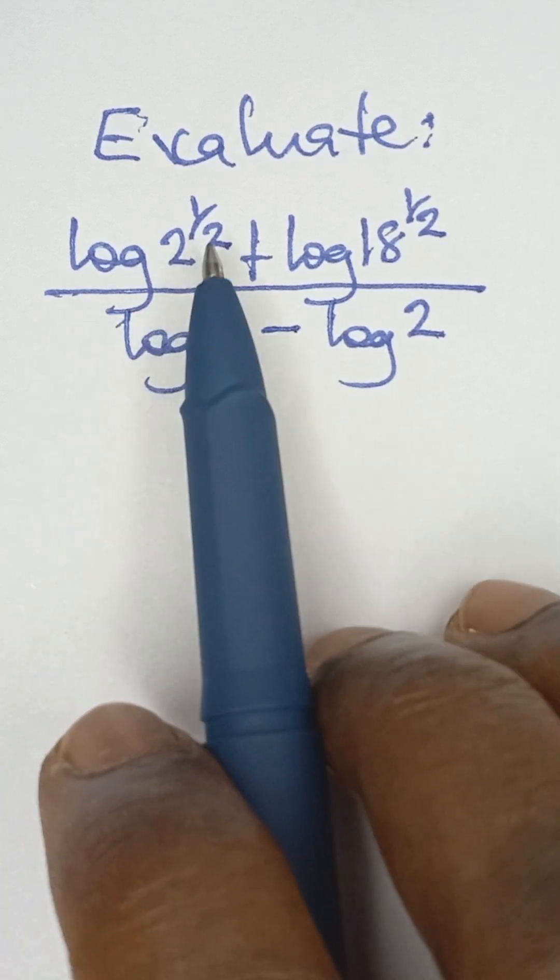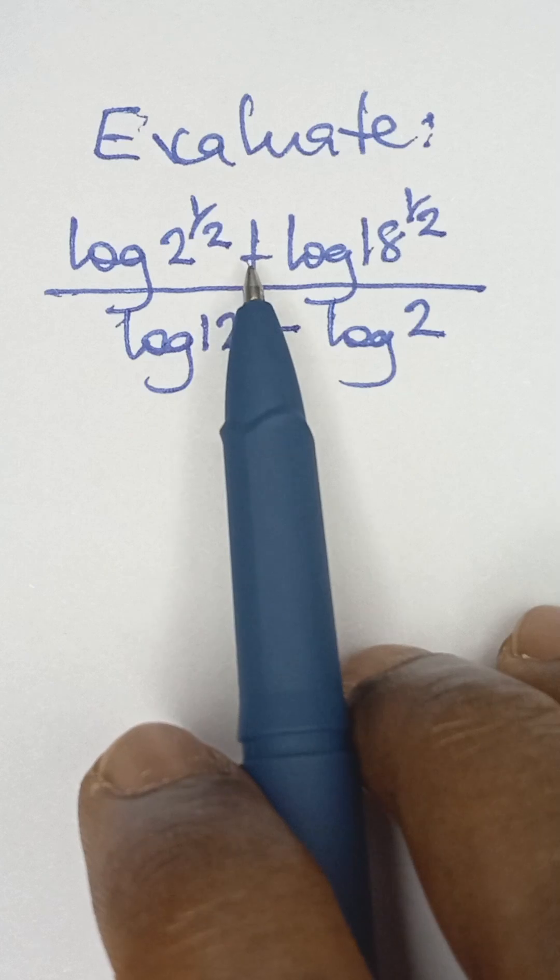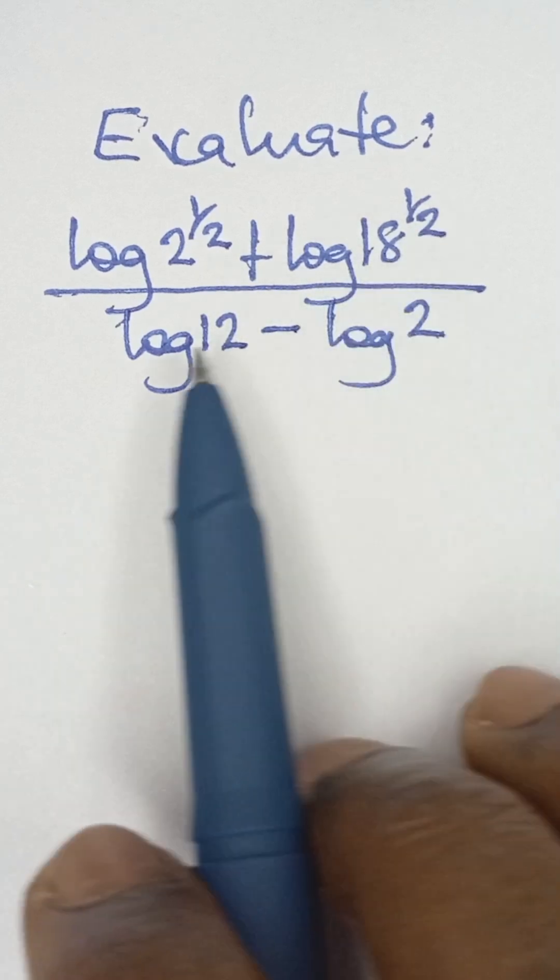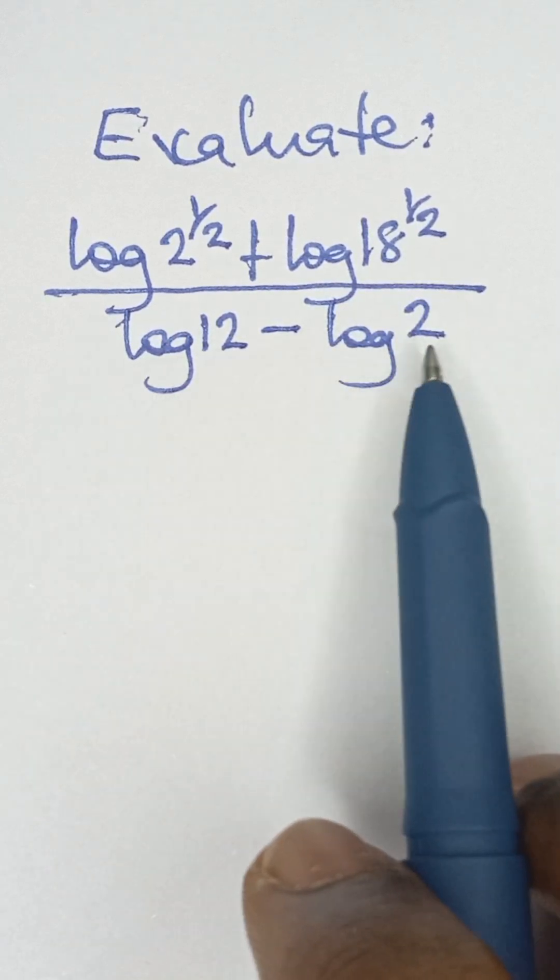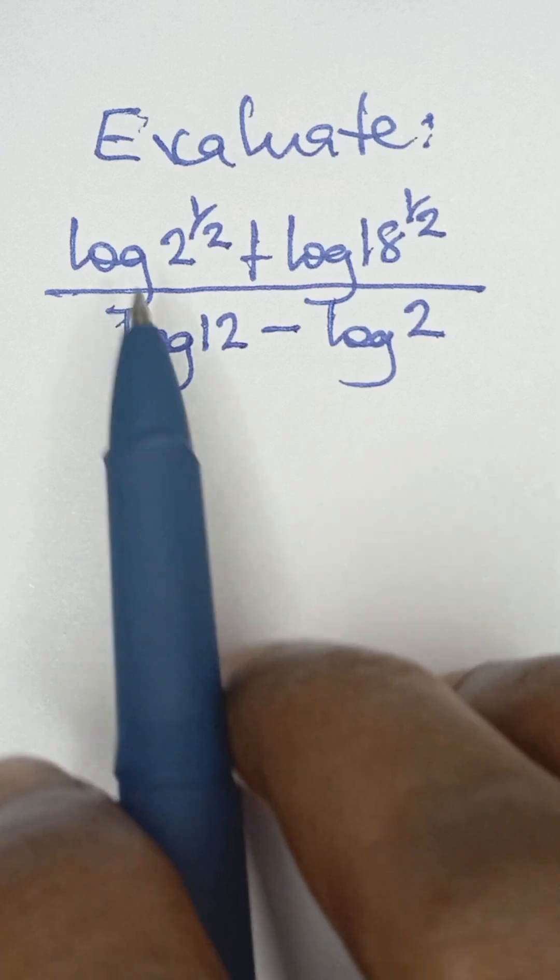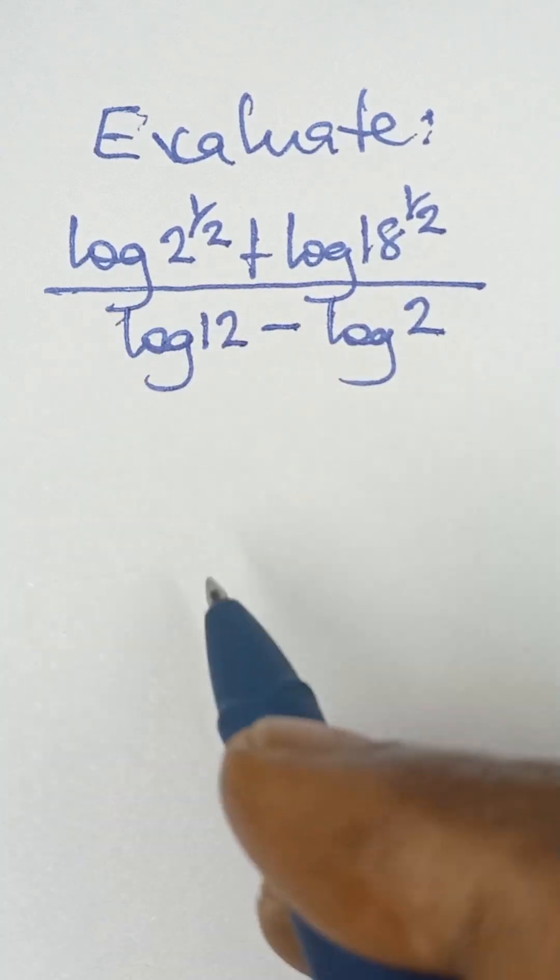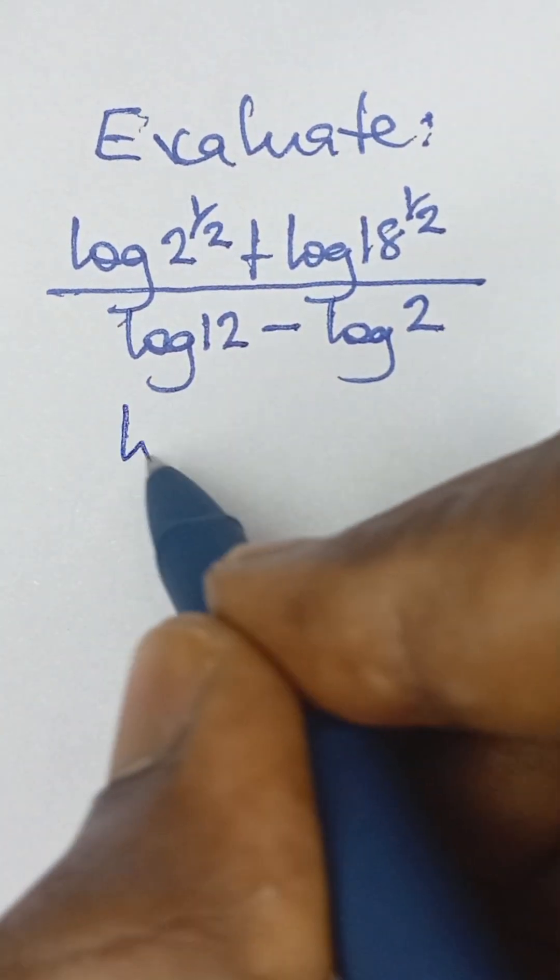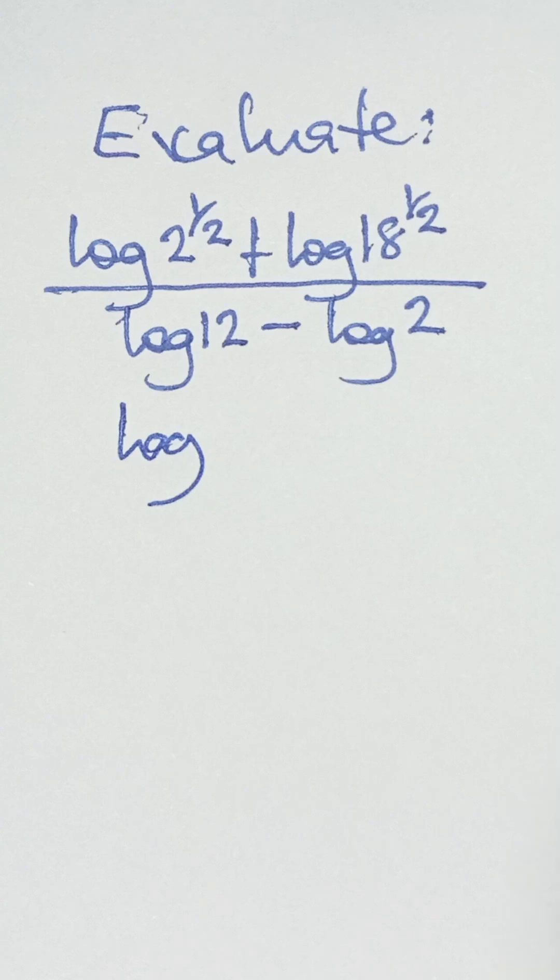Evaluate log 2 raised power half plus log 18 raised power half all over log 12 minus log 2. Now to apply the theory of logarithm here, we are simply going to take the log of the value.